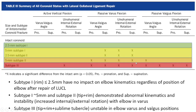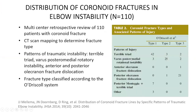In a retrospective analysis of 110 coronoid fractures from two level 1 trauma centers, investigators reconstructed the coronoid fracture lines using radiographs and CT scans. Patterns of traumatic instability identified included terrible triad injuries, varus posteromedial injuries, olecranon fracture dislocations, and Monteggia-type variants. The majority of type 1 fractures occurred in terrible triad injuries, which were the most common injury pattern.